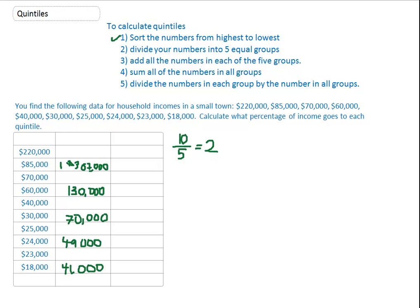Okay, so we sorted from highest to lowest. We divided our numbers into five equal groups, where each group had two people. Check. Add all the numbers in each of the five groups. Check. There's our numbers in each of the five groups. I tried to do a dollar sign there, but I want a prettier dollar sign. So much prettier. We're going to leave the dollar signs off the other ones just because I'm not doing very well with my dollar signs right now.